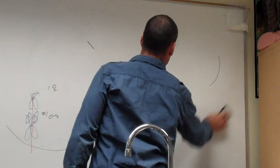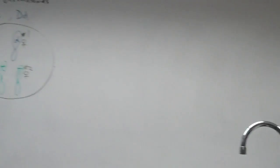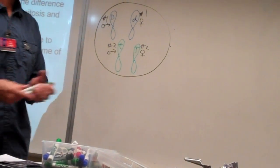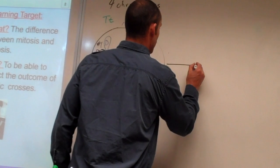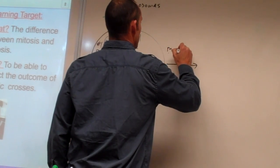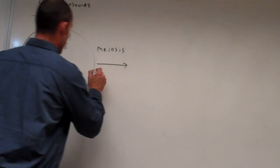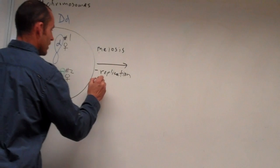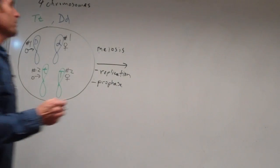It's mitosis twice with meiosis, basically, because you have two separate cell divisions. There's prophase one, metaphase one, anaphase one, and then prophase two, metaphase two, anaphase two, and so forth. Starting with the same cell, we go through replication and prophase — and this is where the goofiness happens.